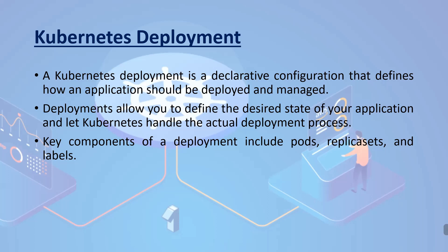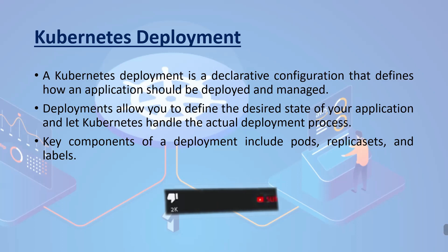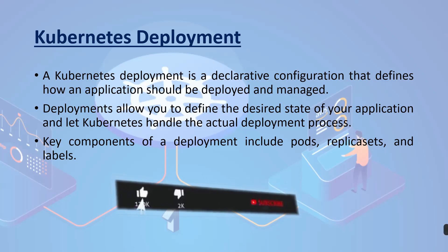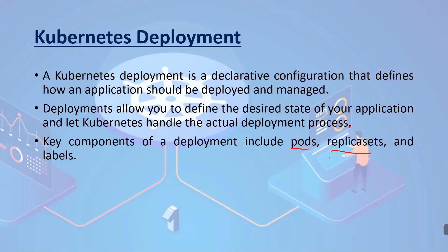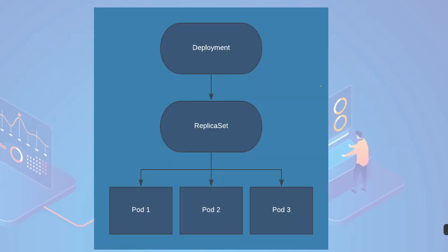A Kubernetes deployment is a declarative configuration that defines how applications should be deployed and managed. Deployments allow you to define the desired state of the application and let Kubernetes handle the actual deployment process. Key components of a deployment include pods, replica sets, and labels — these three things are important in a deployment.